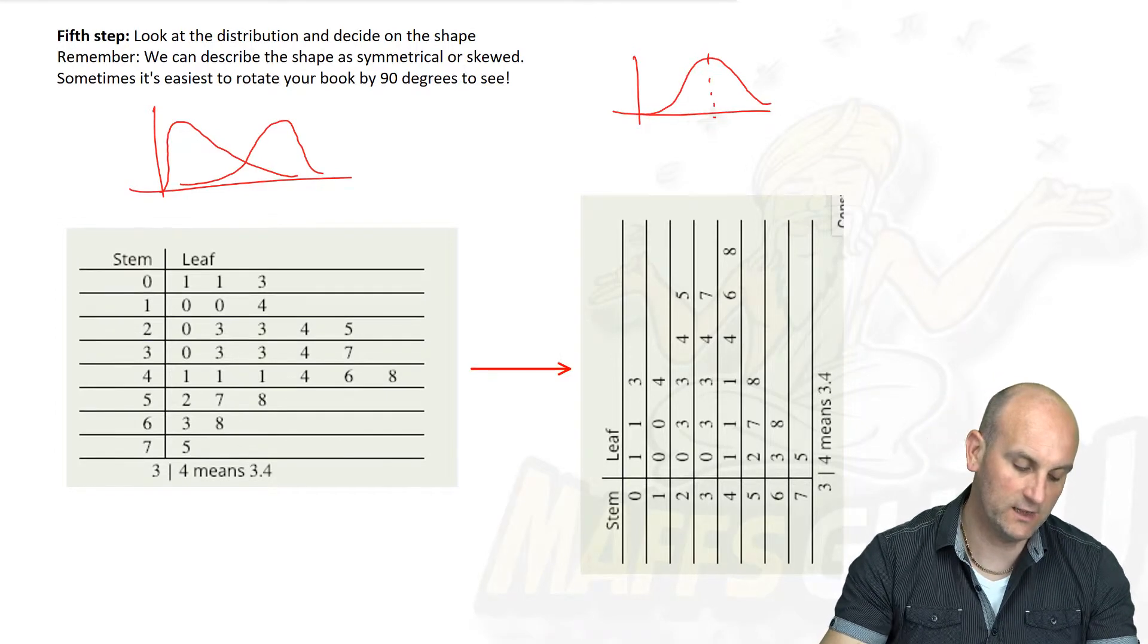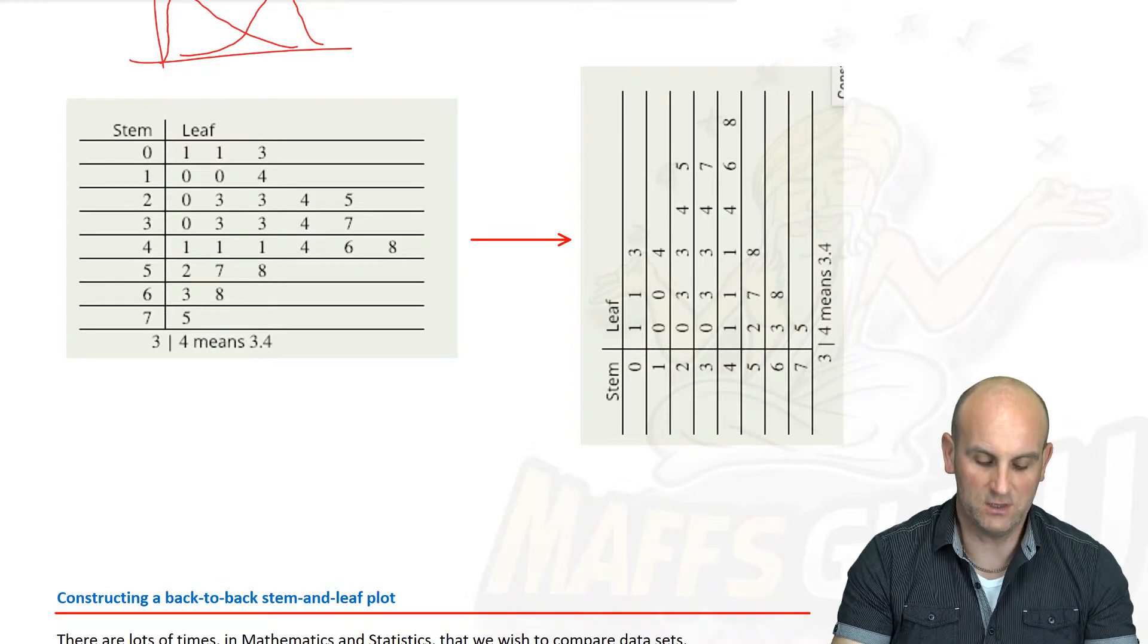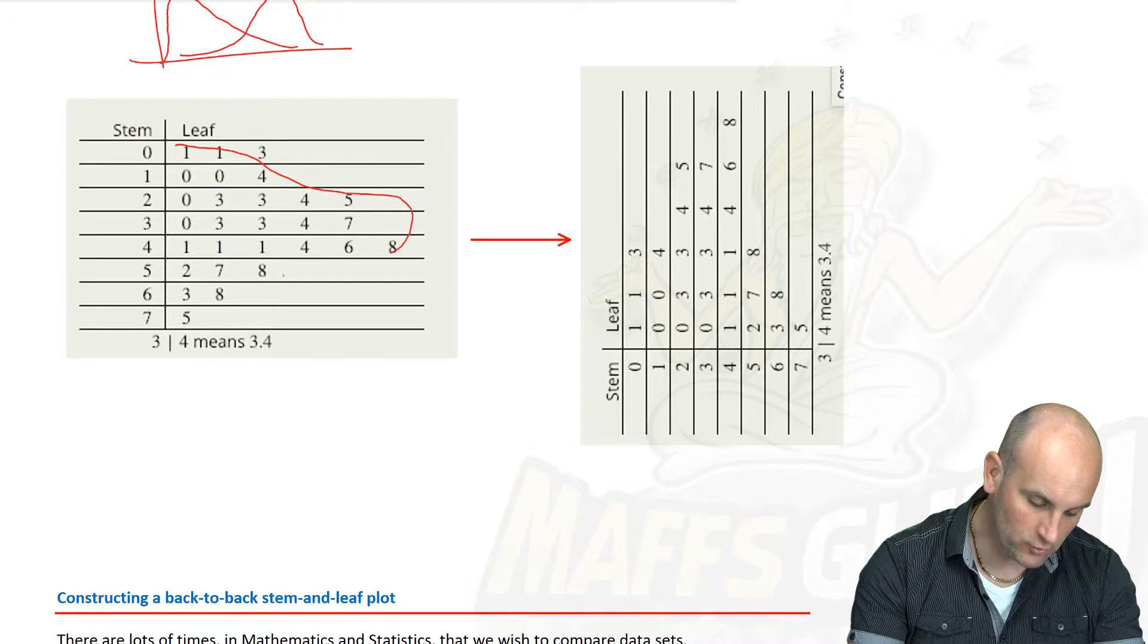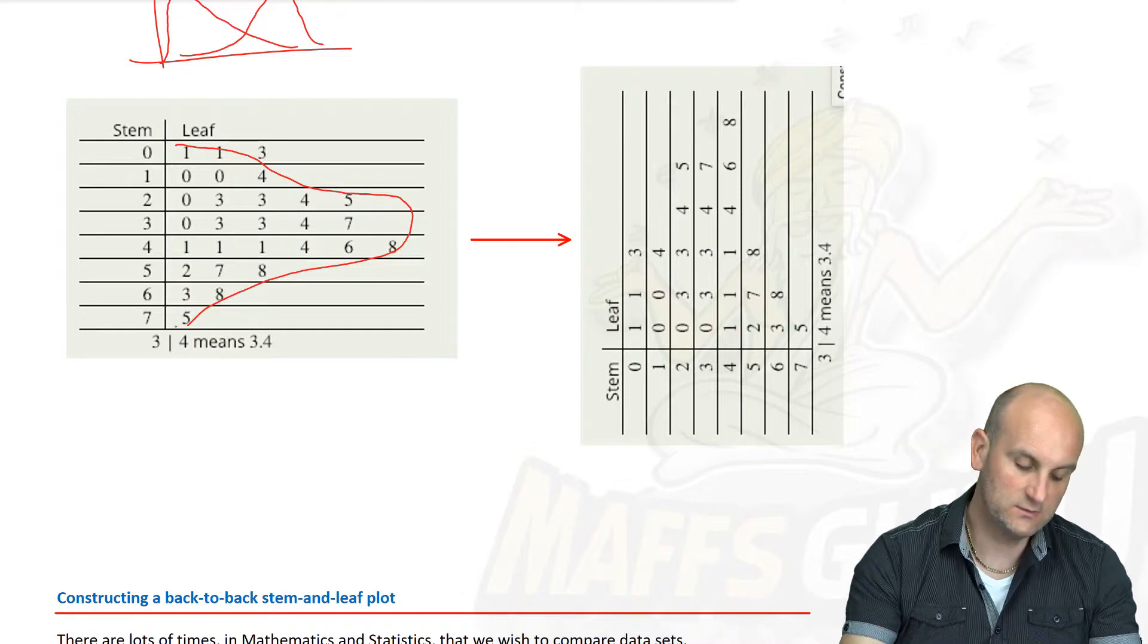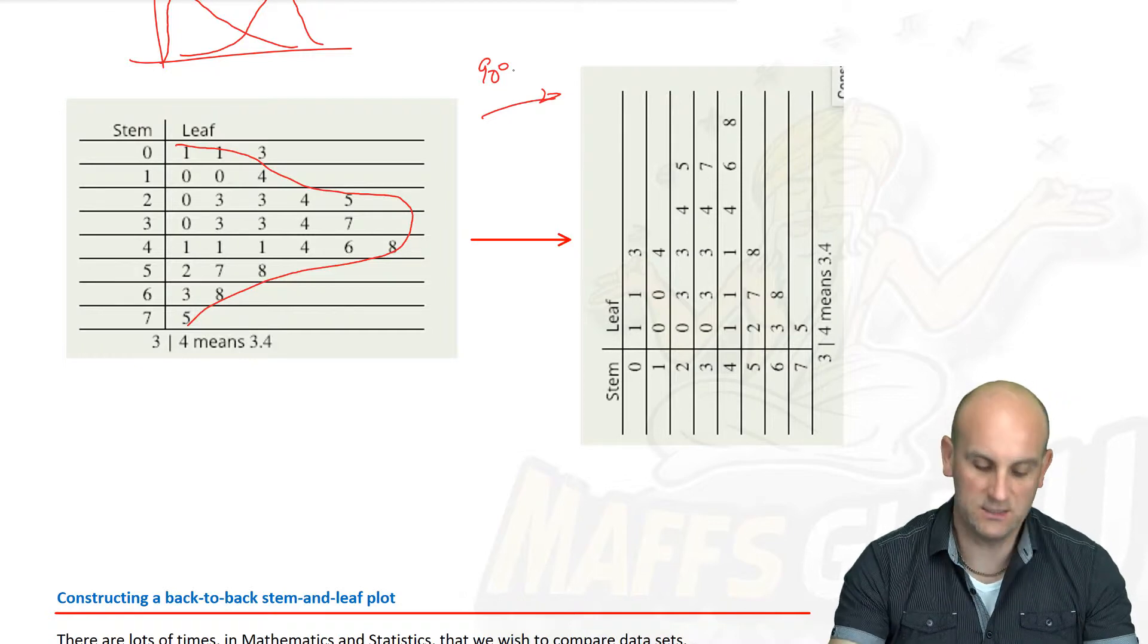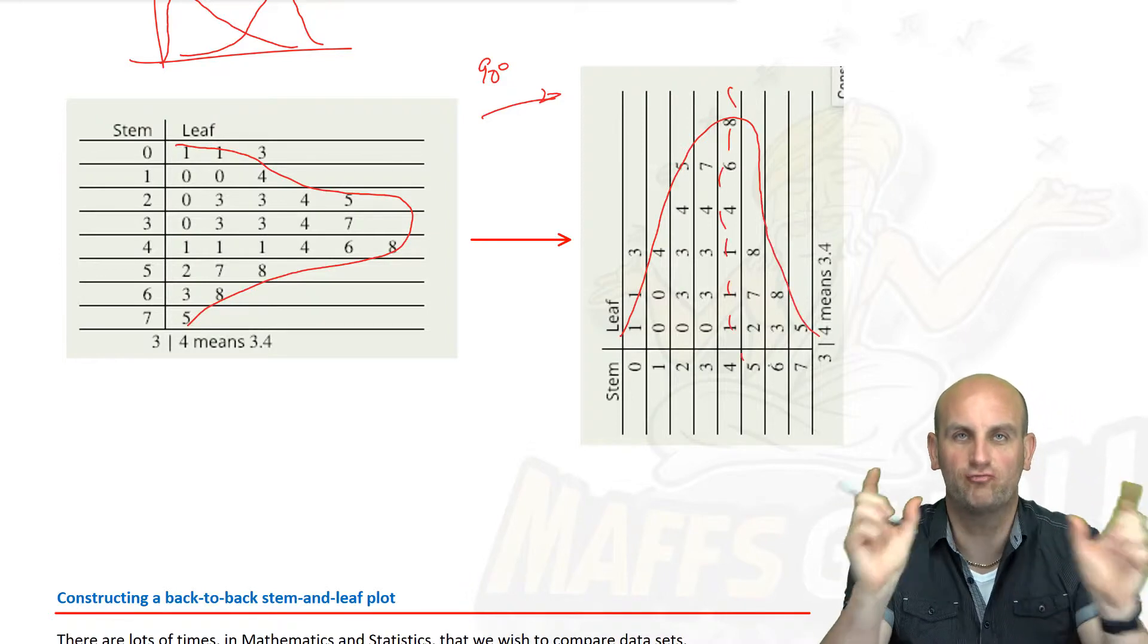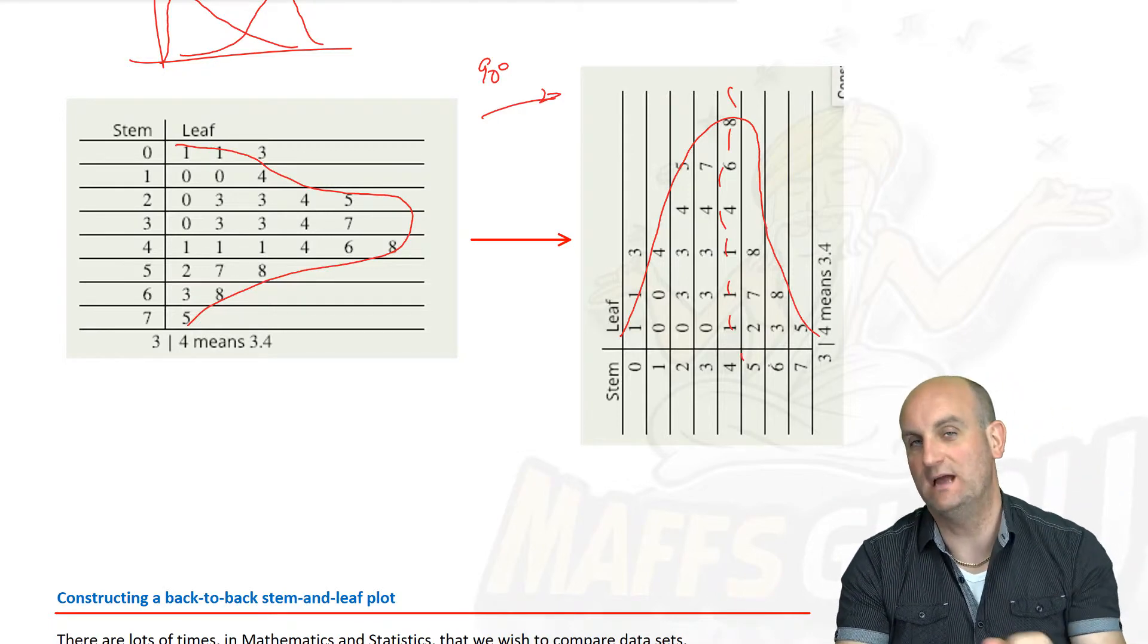If we look at the data in the stem and leaf diagram, it doesn't actually look really apparent. It's a bit confusing. How do I describe the shape? Well, actually, the first thing you can do is just draw on this thing. Now that's not great. And you're going to say, but it's on its side. Well, why don't we turn it through 90 degrees? So I'm going to take that picture and turn it through 90 degrees.